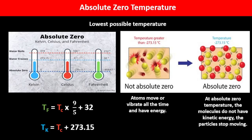The absolute zero temperature is a term we really need to be familiar with in this chapter. We have three scales of temperature: Kelvin, Celsius, and Fahrenheit. The lowest possible temperature is zero degrees on the Kelvin scale, negative 273 on Celsius, and negative 459 on Fahrenheit. Zero degrees Celsius or zero degrees Fahrenheit is not absolute zero — it has to be zero on the Kelvin scale. These two conversion equations will be very useful to remember for exams.